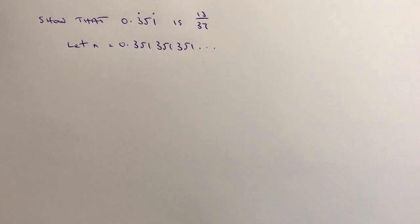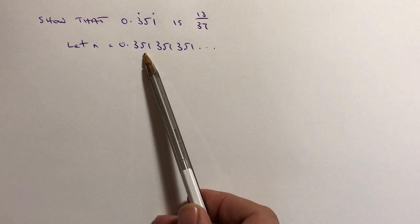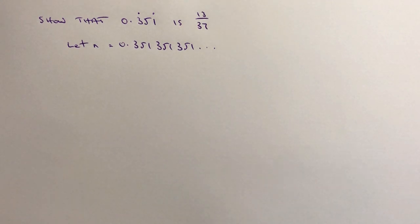Now normally we can either multiply n by 10 or 100 or 1000. They tend to be the main ones. In this particular case, if we multiply by 10 or 100, we're not going to be in a position to get rid of the recurring numbers. Same again with 100, but this time we're going to multiply by 1000.